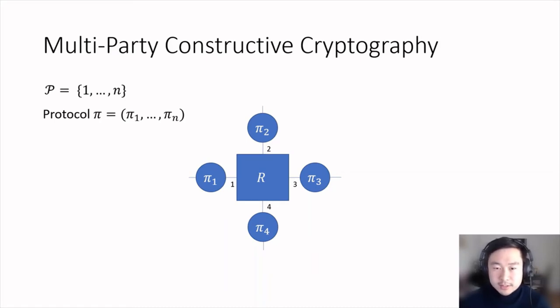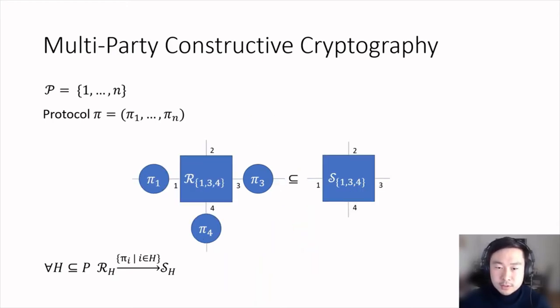However, in the multiparty setting, an essential aspect is that parties can be either honest or dishonest. While an honest party applies its converter, there is no guarantee from dishonest parties. The goal is then to state meaningful guarantees for the set of honest parties. Therefore, the multiparty construction notion states a separate guarantee for each possible set of honest parties. For example, if parties 1, 3, and 4 are honest, they apply their converter, and the construction statement would state that this specification is part of an ideal specification S_{1,3,4}.